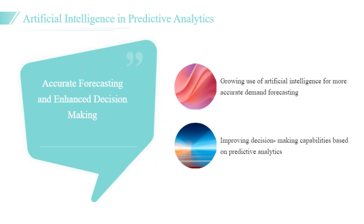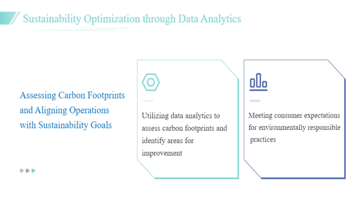The integration of autonomous systems and IoT devices will provide new opportunities for real-time data collection and analysis. These advancements will enable organizations to automate various supply chain processes, leading to increased efficiency and reduced operational costs. The use of artificial intelligence in predictive analytics is also anticipated to grow, leading to even more accurate forecasting and enhanced decision-making capabilities. Companies that embrace these technologies will be better positioned to respond to market demands and operational challenges, ensuring a competitive edge in the marketplace.